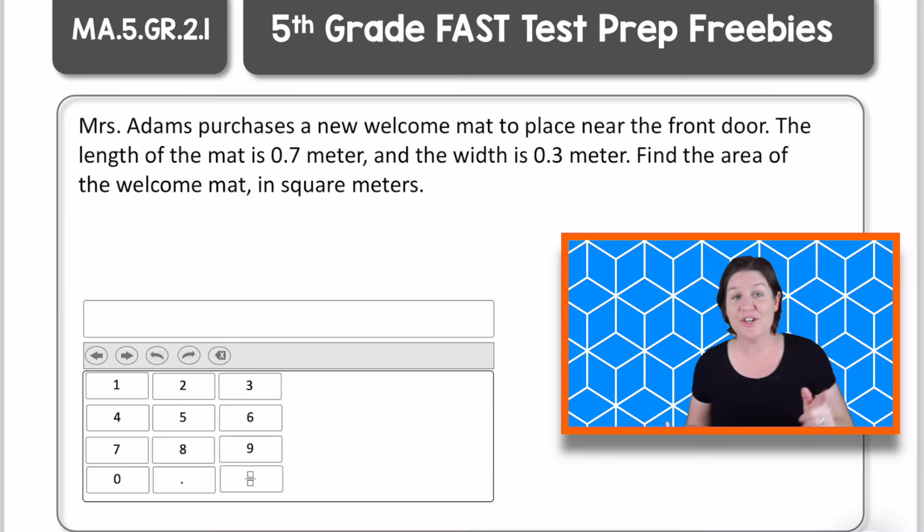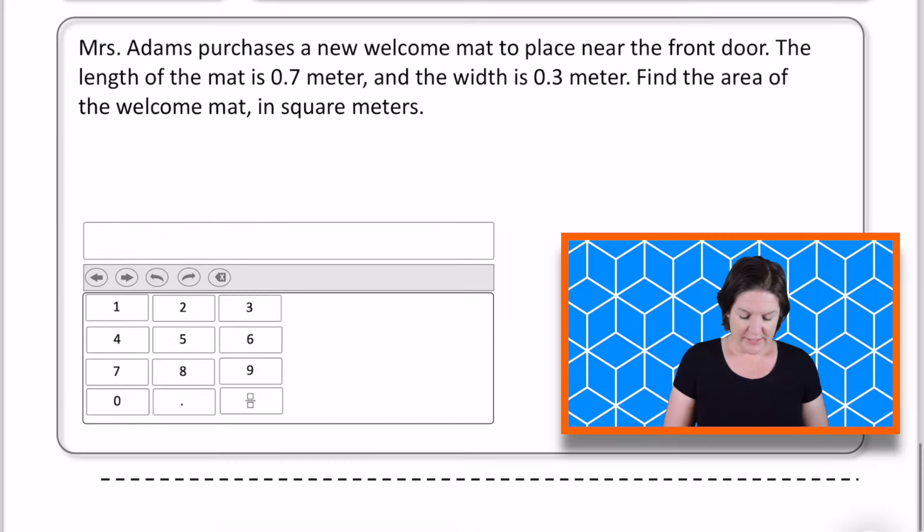Welcome back fifth grade. Let's go over this one. So it says Mrs. Adams purchases a new welcome mat to place near the front door. The length of the mat is 0.7 meter, and the width is 0.3 meter. Find the area of the welcome mat, in square meters.